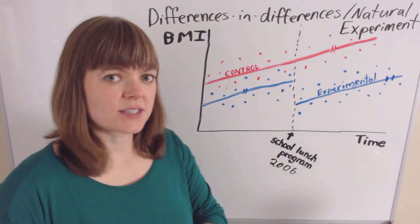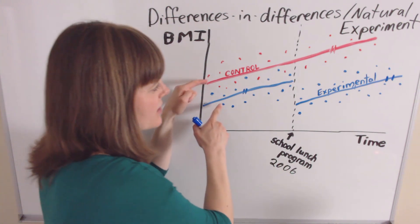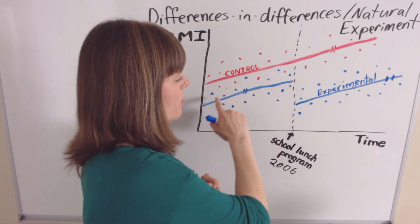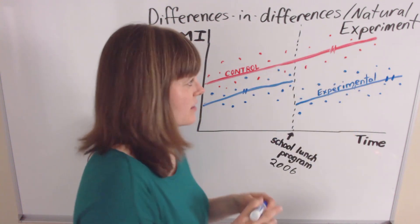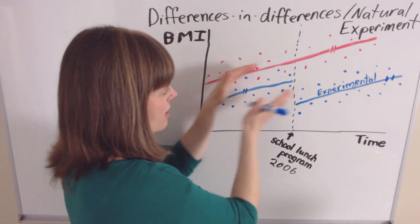And the key with the control and experimental group is that they need to have the same trend over time. So that's why I've marked these lines as all parallel lines. It's the same trend over time.